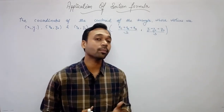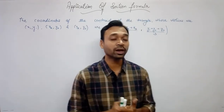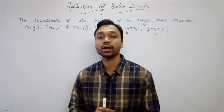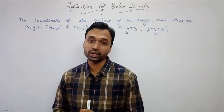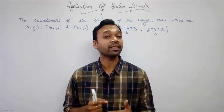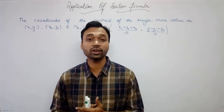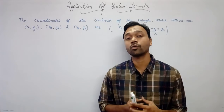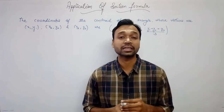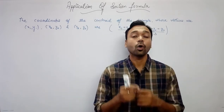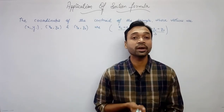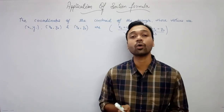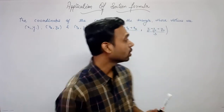We have studied all of this in our earlier classes and have covered many important results. Even in 9th class we did a question: prove that the medians of a triangle are concurrent, meaning all three medians pass through a single point, and that point is called the centroid.